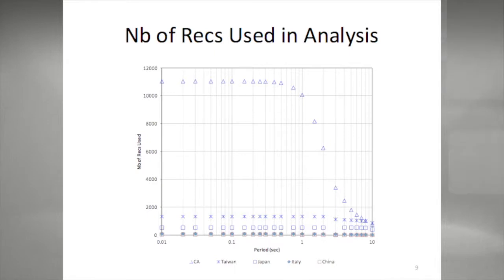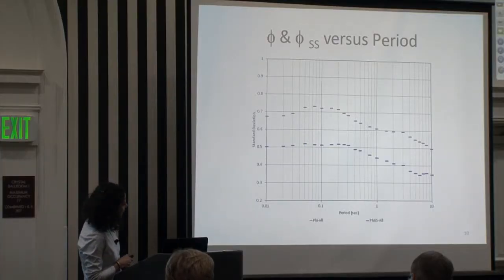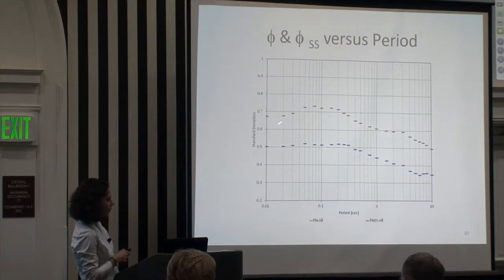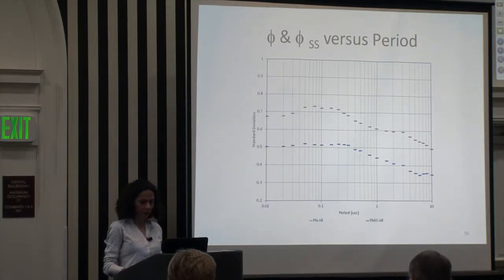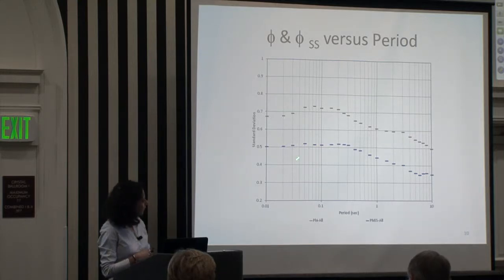This plot shows the number of recordings used per spectral period. The number of recordings drops after about a period of one second due to the minimum usable frequency of the data. Looking at the difference between phi and phi SS for the Abrahamson et al. residuals: in red is the ergodic phi and in blue is the single-station phi for all the data together, all regions grouped. You can see the difference obtained after taking out the site-to-site term.